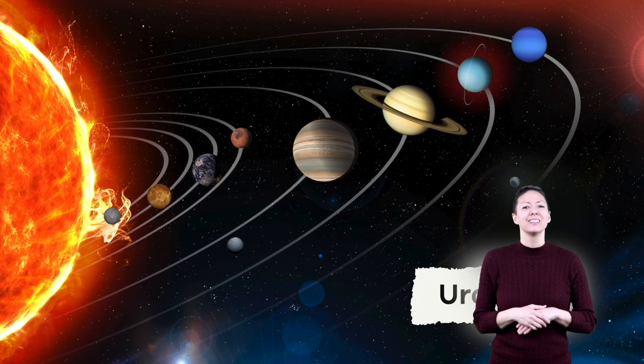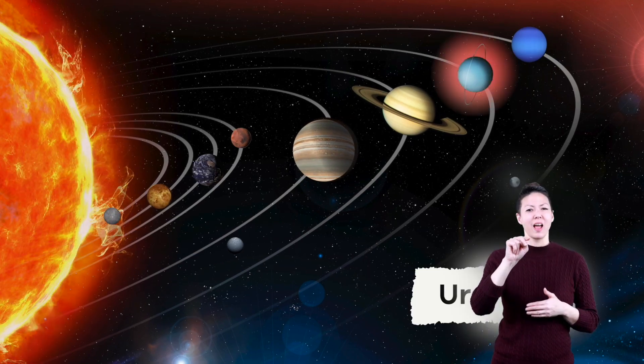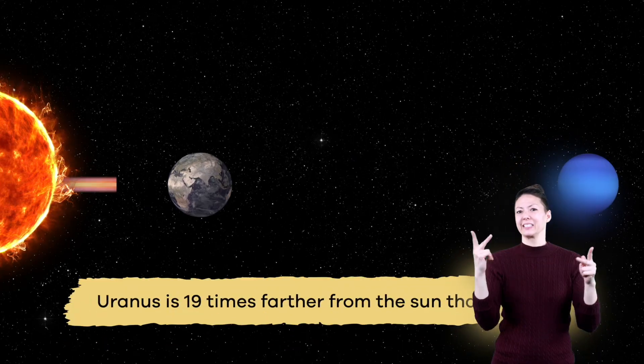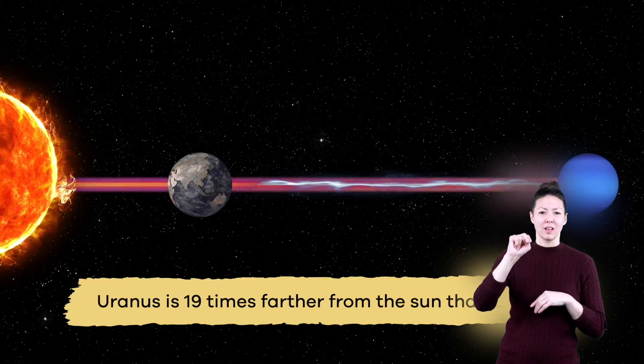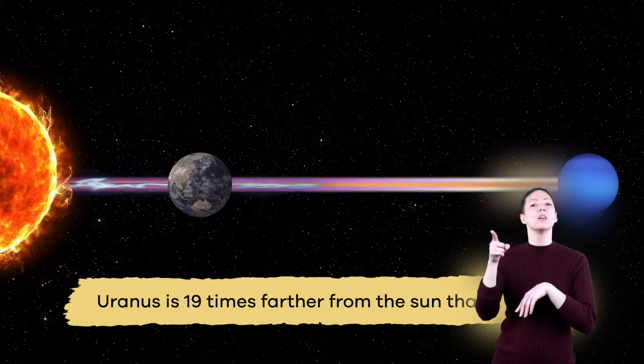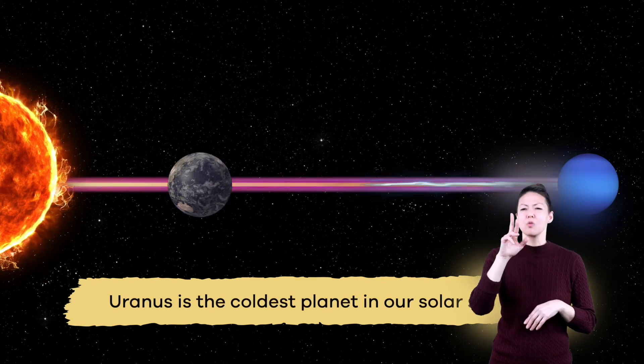Speaking of cool planets, Uranus is known as an ice giant. It is made up of mostly water and it's freezing cold. It is 19 times farther from the sun than Earth. Why do you think that makes Uranus a very cold planet?